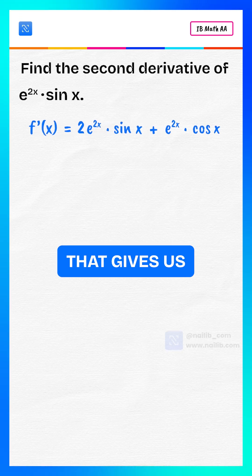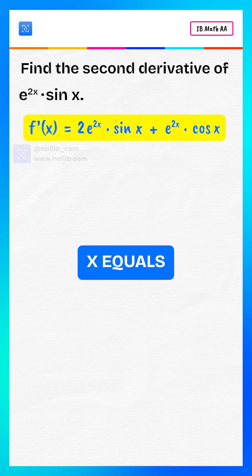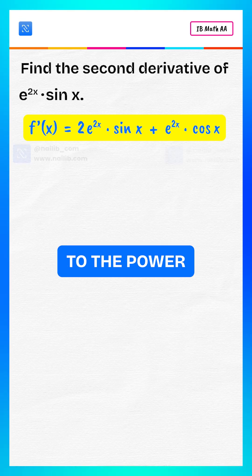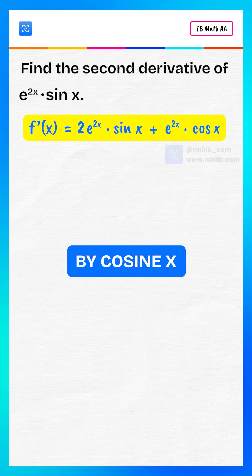That gives us the first derivative: f prime of x equals 2 times e to the power 2x multiplied by sine x plus e to the power 2x multiplied by cosine x.